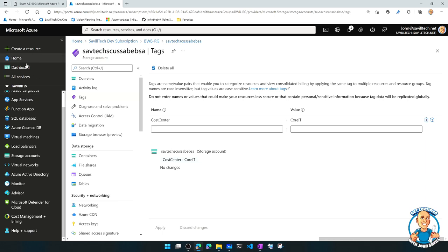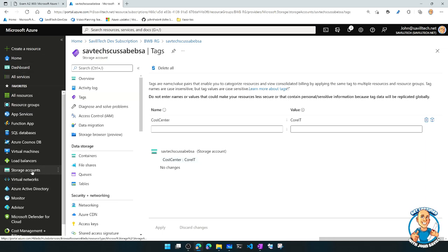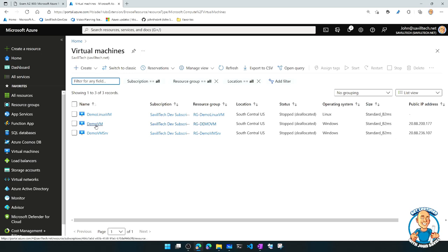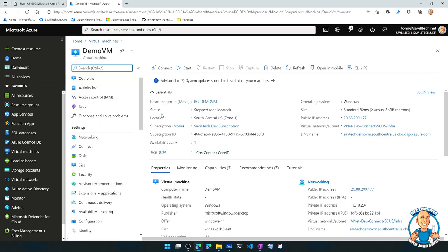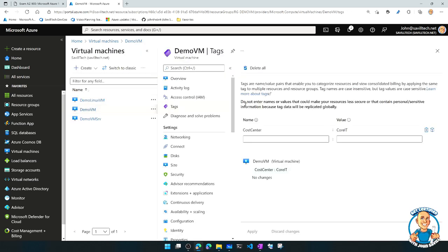But if I actually jump over and look at, for example, my virtual machines, if I look at my demo VM, and I look at its particular tags, well, here, let's have a quick look, you can see, I've got that cost center tag there. But I could go and maybe add additional ones.